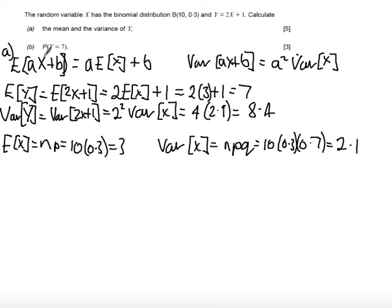Part B asks to find the probability that Y equals 7. So if Y equals 7, then 7 equals 2X plus 1. Let's just change that so it's a 7—that makes sense rather than putting the Y there.